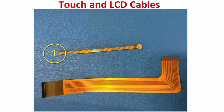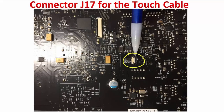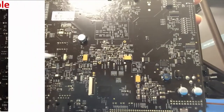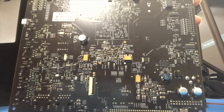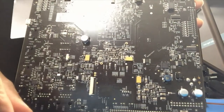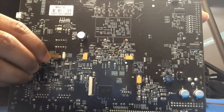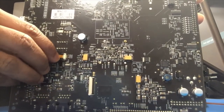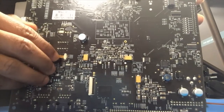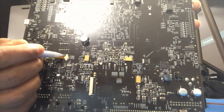Let's begin by connecting the touch cable end shown here to the IDK board. Flip the IDK board over to find the J17 connector shown here. Slide the black portion out to place the connector in the open position. Insert the plain end of the touch cable into the connector with the contact facing away from the IDK. Close the connector to secure the connection.